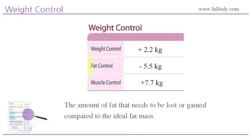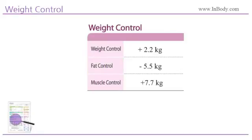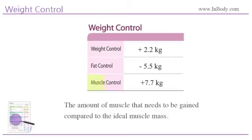Weight control. Fat control is the amount of fat that needs to be lost or gained compared to the ideal fat mass. Muscle control is the amount of muscle that needs to be gained compared to the ideal muscle mass. Based on this information, you get the weight control, the sum of fat control and muscle control.